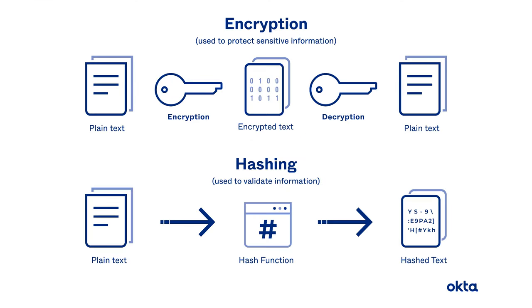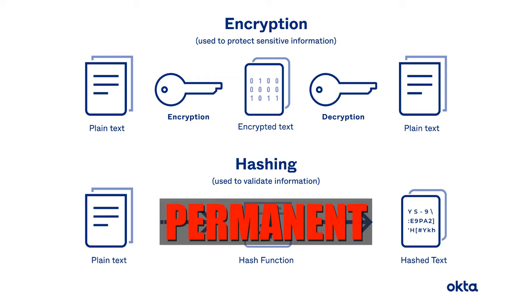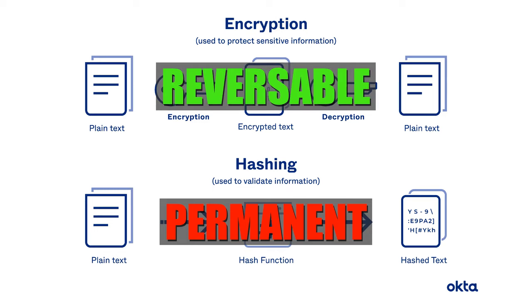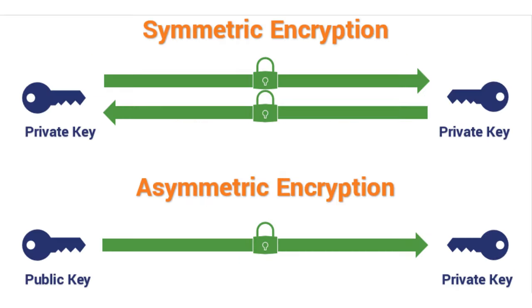What's the difference between hashing and encryption? Hashing is permanent — it is intended to preserve the integrity of the file. Whereas encryption is reversible; it's intended to ensure the confidentiality of the file or the email.